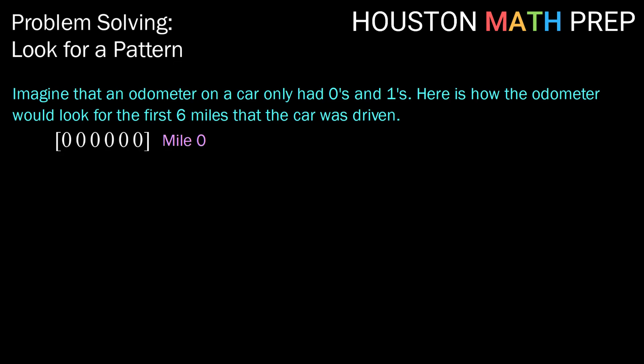For mile zero, before we've driven the car at all, we notice that all six digits are zero. For mile one, now we have a one in the far right digit. For mile two, that one now moves over into the next spot. For mile three, we have a one in the second and the first place.